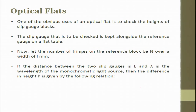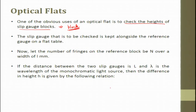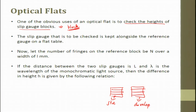One of the obvious uses of an optical flat is to check the height of a slip gauge block. We studied the slip gauge for end measurement and made blocks for measuring height. The slip gauge to be checked is placed alongside the reference gauge on a flat table, and an optical flat is placed on top at a small angle theta.